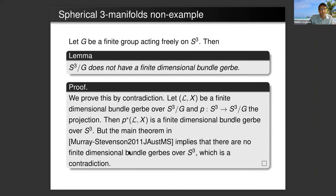I'll just end quickly. I think I've run out of time, but I'll just give this non-example. Suppose G is a finite group acting freely on the 3-sphere. Then the quotient of S^3 by G does not have a finite dimensional bundle gerbe. One can prove this by contradiction. Suppose L_X is a finite dimensional bundle gerbe over S^3/G and P is the projection map.